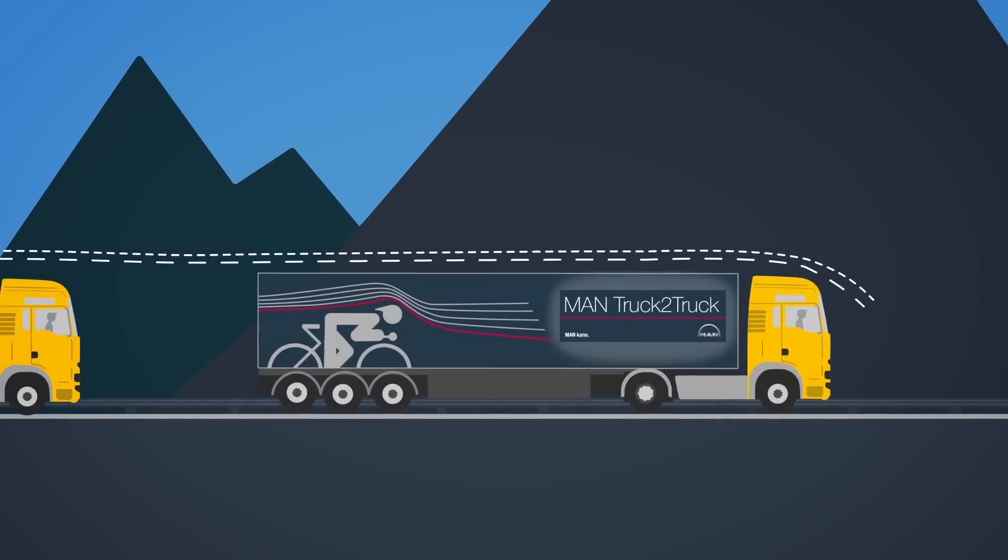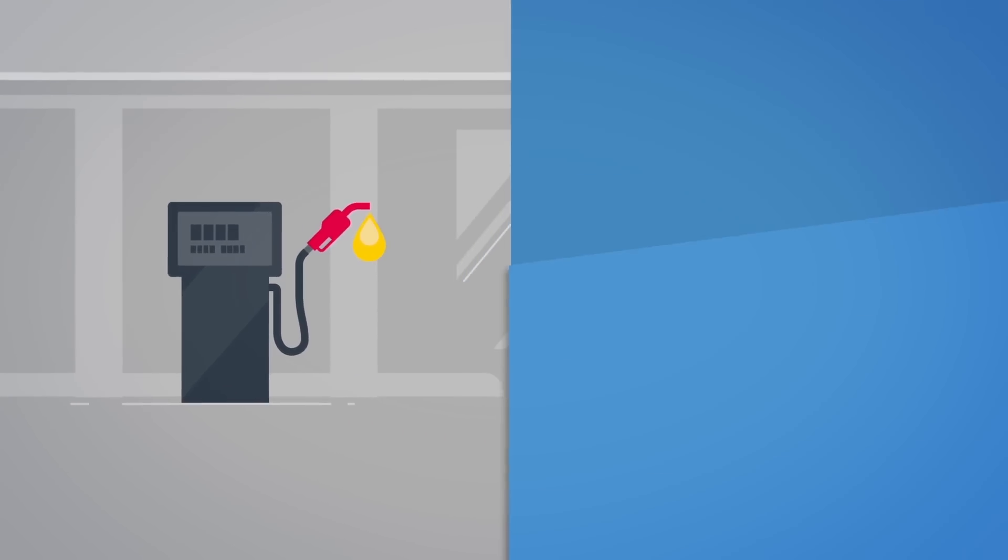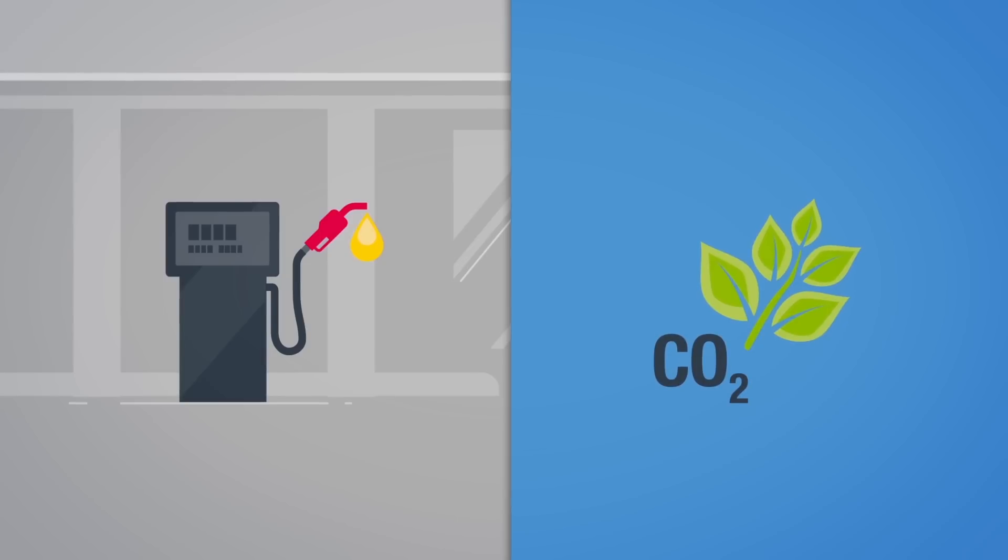Platooning offers a whole series of positive effects. Driving in a slipstream saves a great deal of fuel, which also considerably reduces CO2 emissions. Measurements register up to 10% less in both cases.